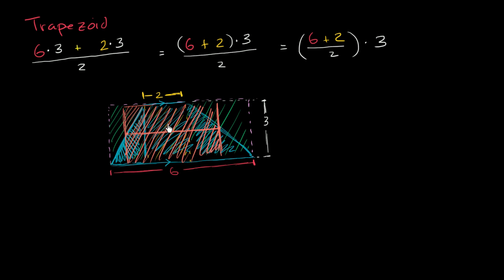Now, let's actually just calculate it. So we could do any of these. 6 times 3 is 18. This is 18 plus 6 over 2. That is 24 over 2, or 12. You could also do it this way. 6 plus 2 is 8, times 3 is 24, divided by 2 is 12. 6 plus 2 divided by 2 is 4, times 3 is 12. Either way, the area of this trapezoid is 12 square units.